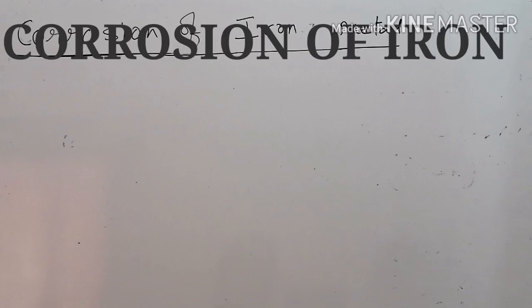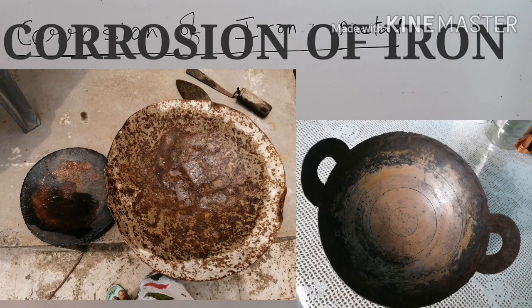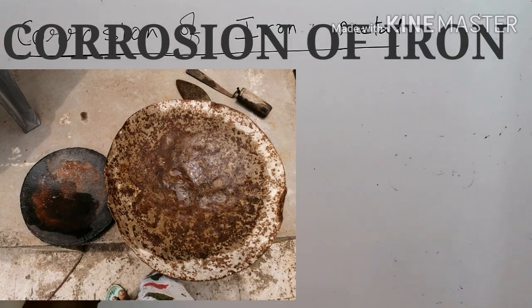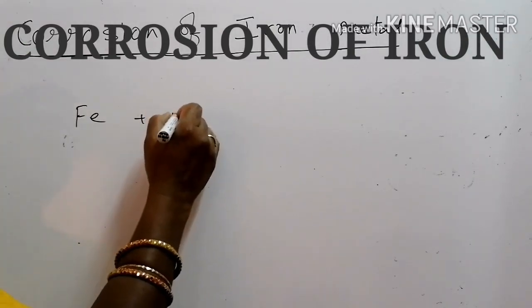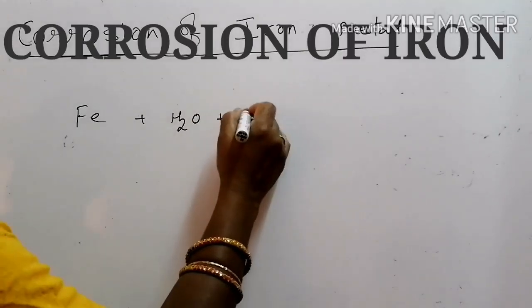This brown coating is of ferric oxide or we can say hydrated ferric oxide. And this hydrated ferric oxide is called rust. This ferric oxide layer is formed when iron comes in contact with moist air.